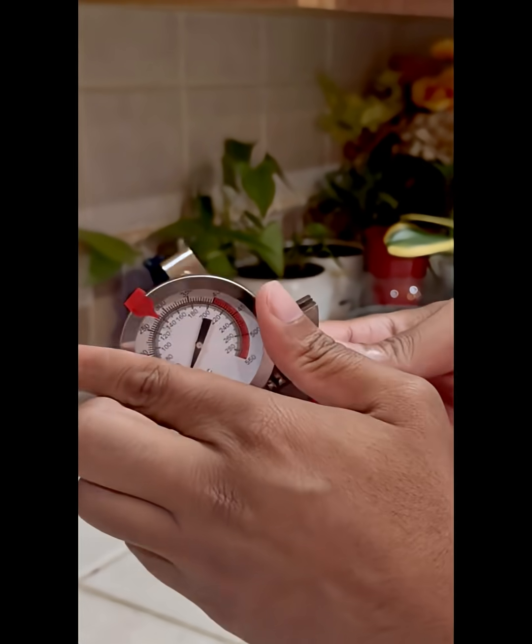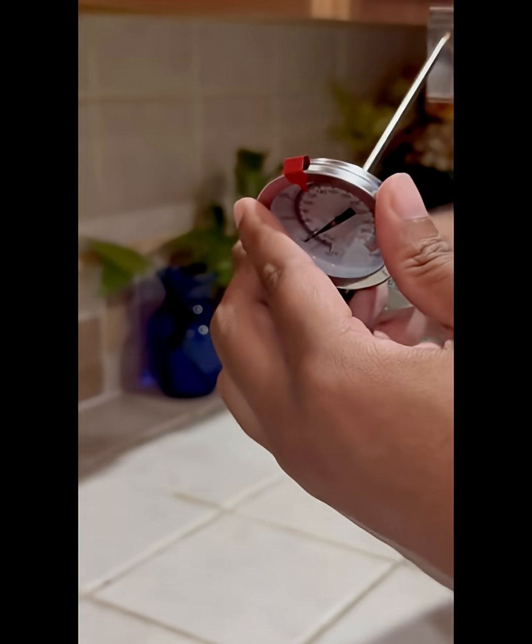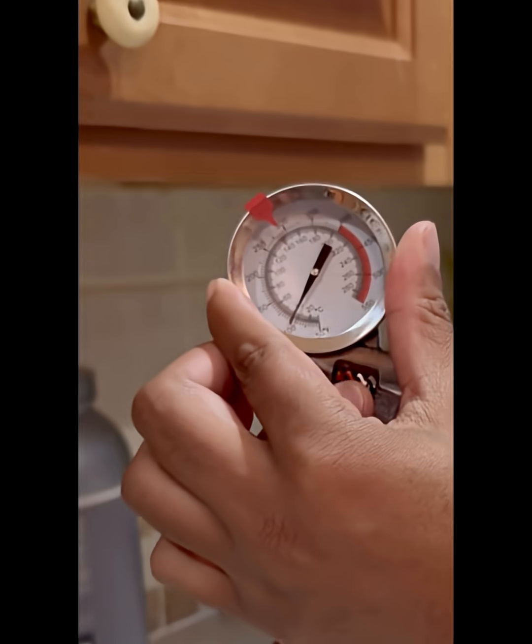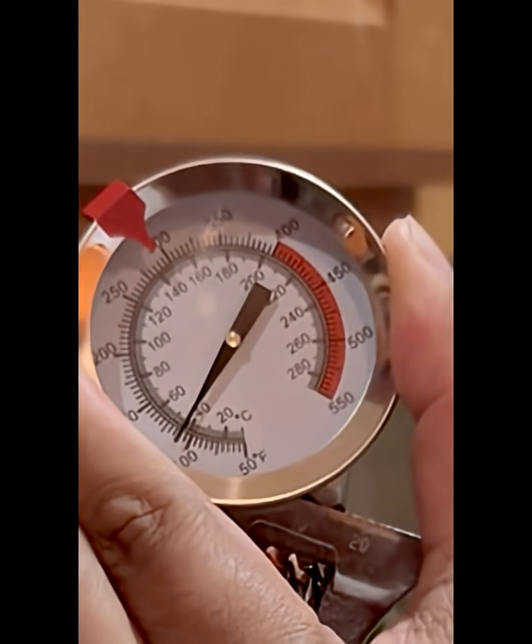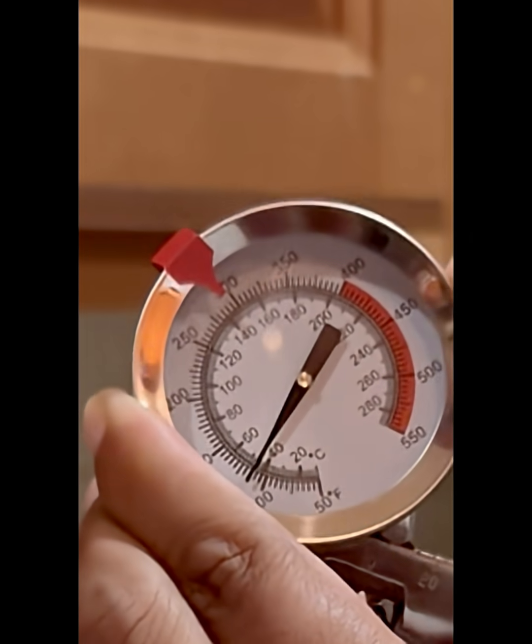Calibration is simple. Hold the nut on the back of the dial with a wrench and gently turn the dial with your hand, clockwise or counterclockwise, to adjust the reading. Here we turn it 12 degrees to the right because it was reading too low.